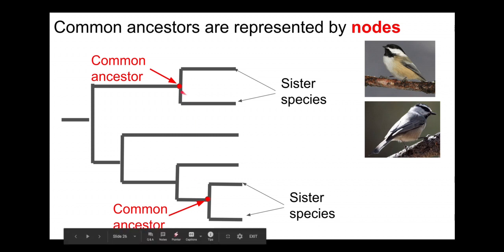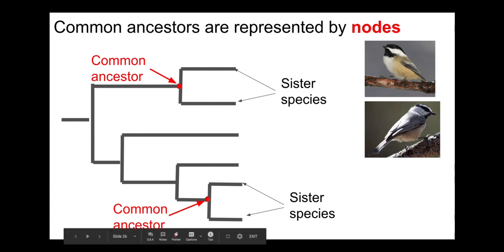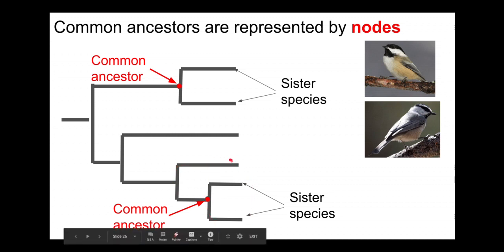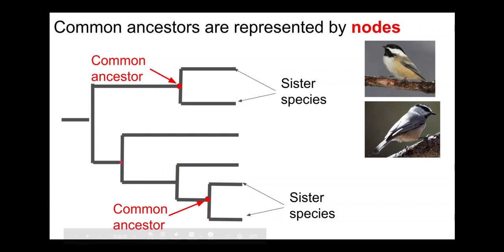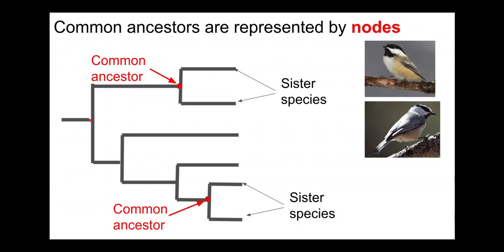It's very important to understand that nodes represent inferred common ancestors — we typically don't know and can't know what they looked like, but they are inferred species that existed in the past. The node here is a common ancestor of two current species. Going further back, this node would be the common ancestor of all of these species, and this node here would be the common ancestor of all species in this clade.